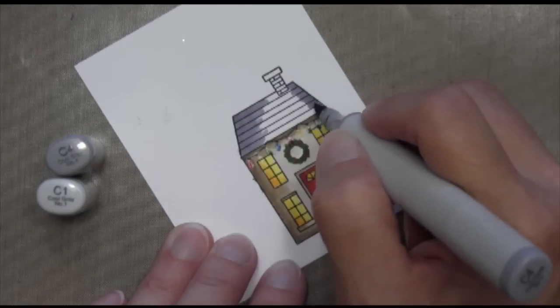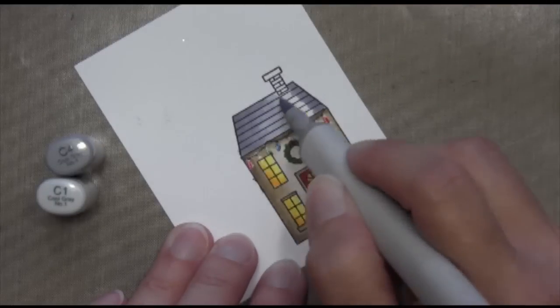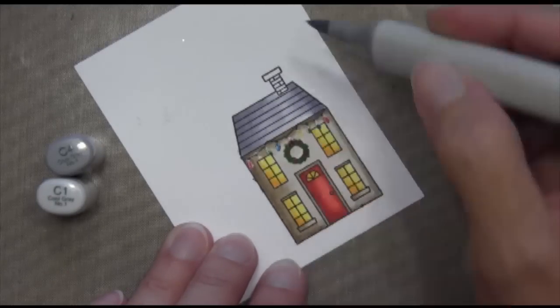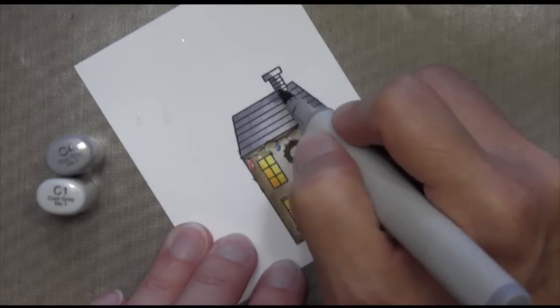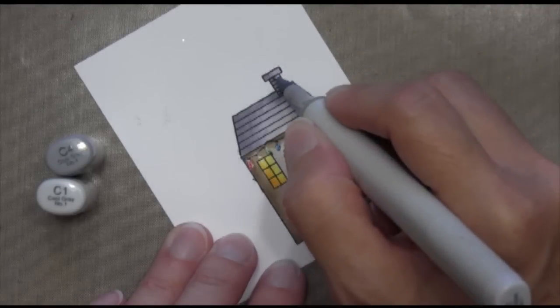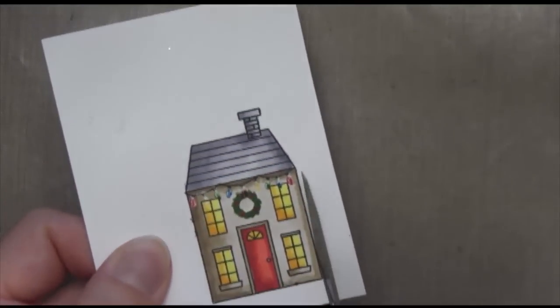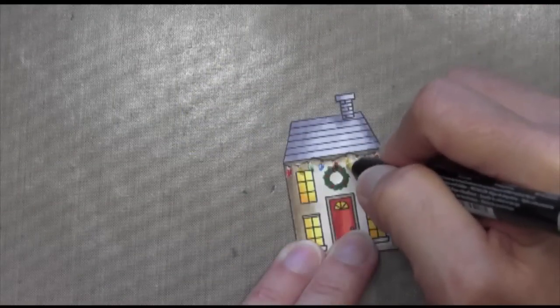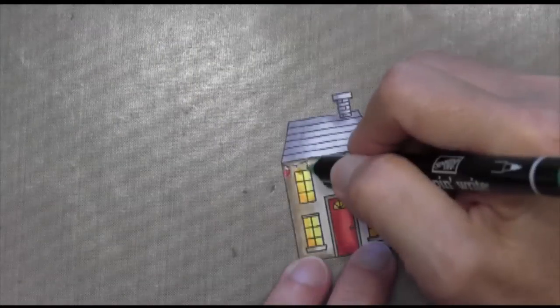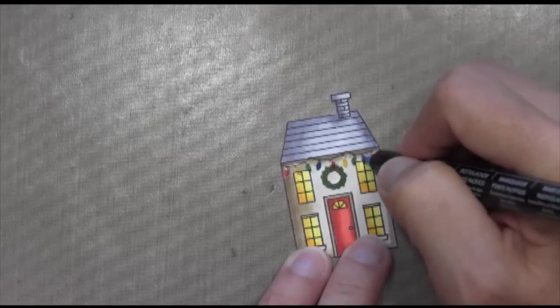Now for the rooftop, I'm just going to use two colors, C1 and C4. I started with the C4 and then I'll blend toward the middle with the C1. I'm working in parts because that way the ink stays wet and I can blend it easily. You can see I put a little shadow where the chimney is. Now I'm going to cut that out. There's actually some framelits that come with this, so you could buy the framelits and make it easier. Especially if you think you might be doing multiple Christmas cards.